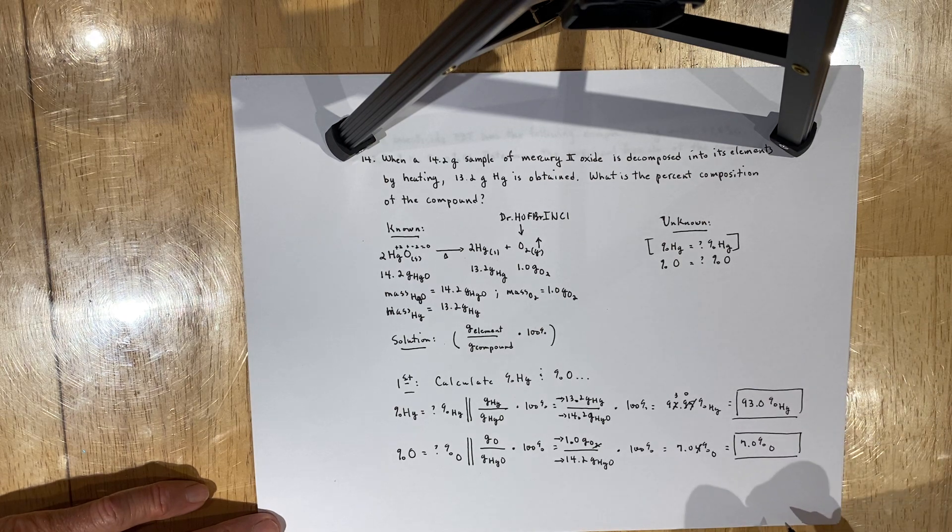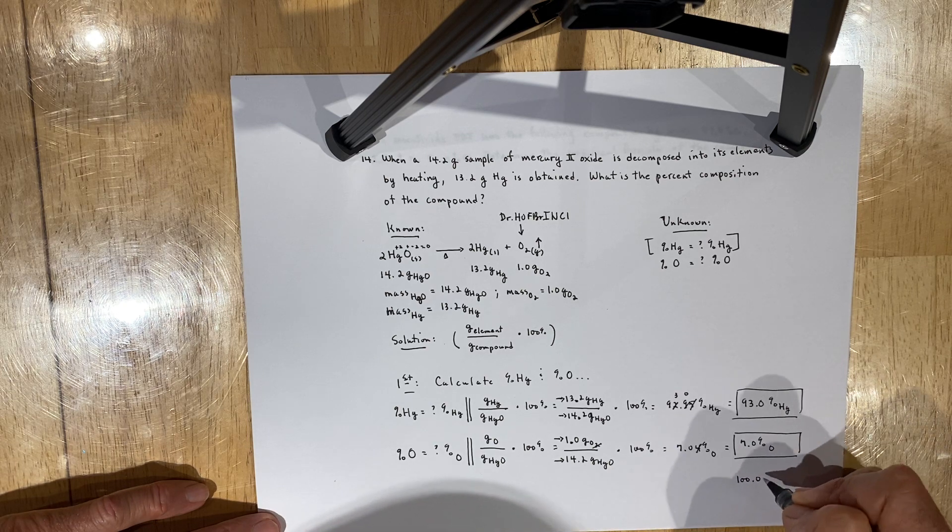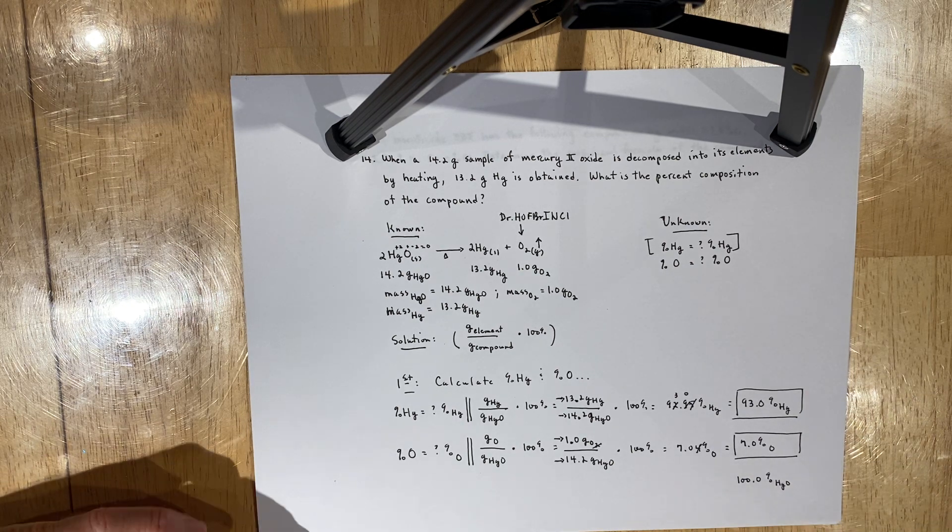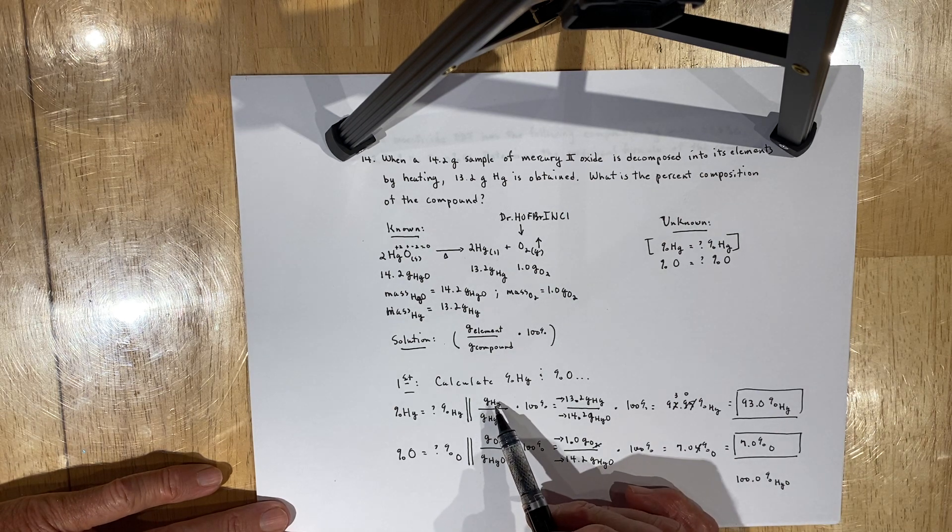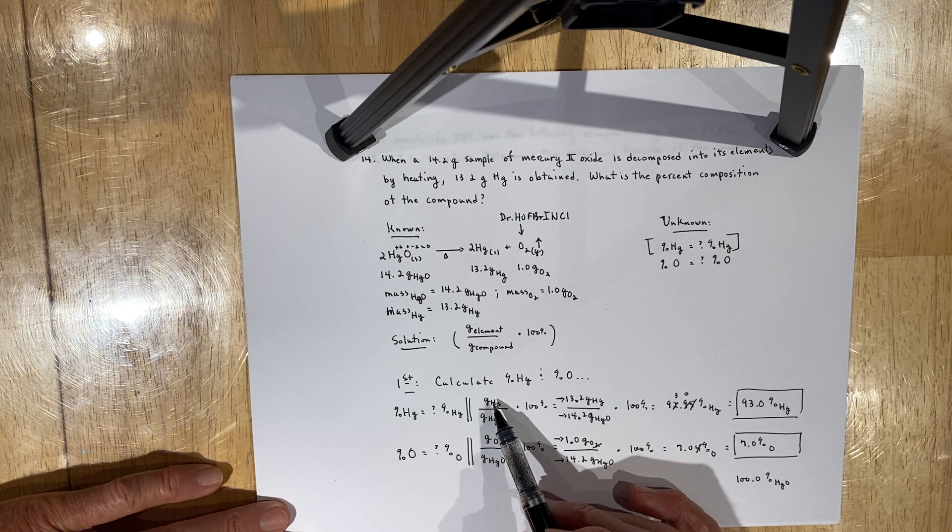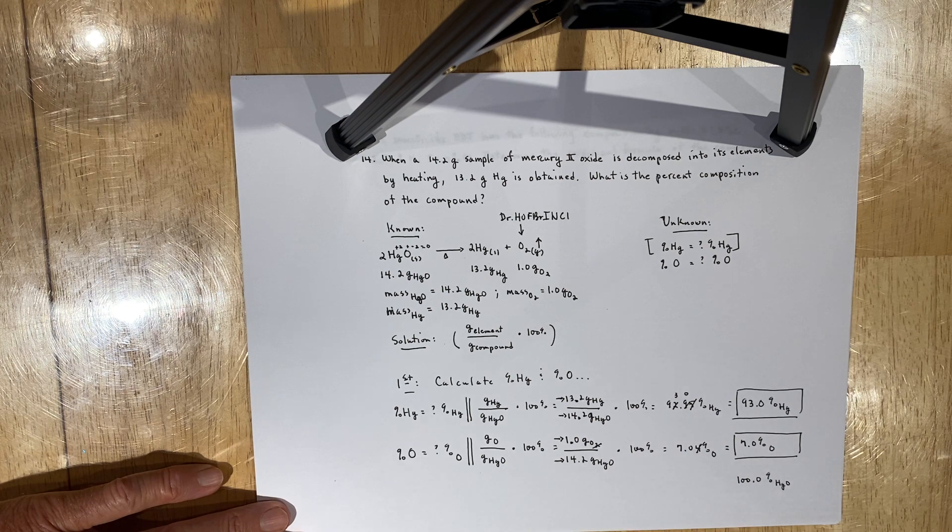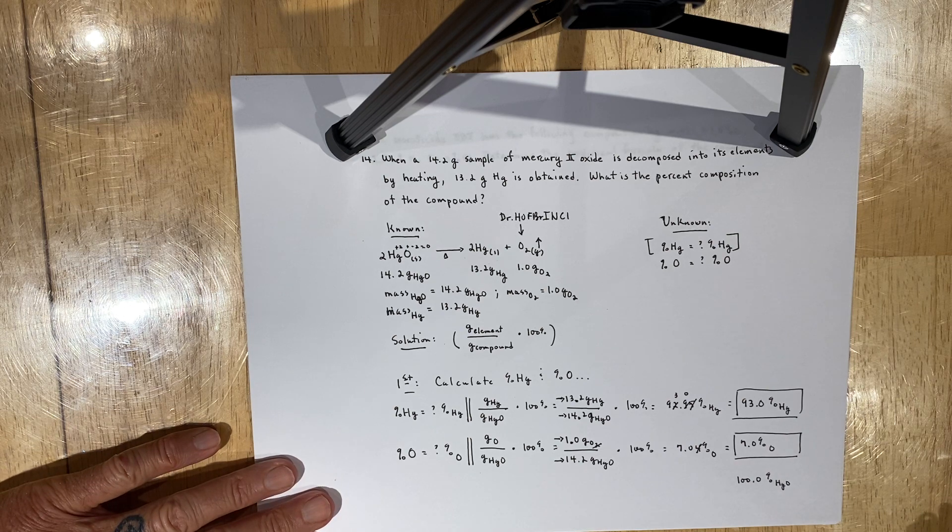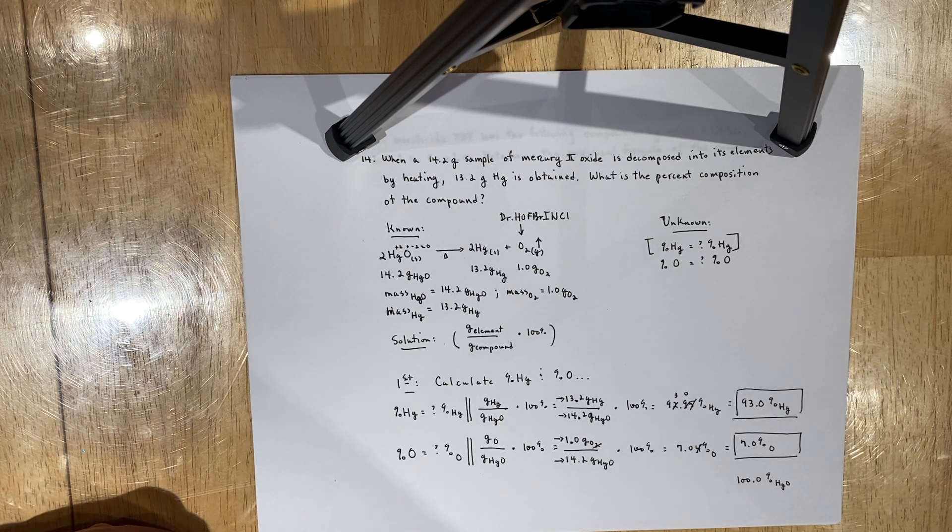Which makes good sense because 93 plus 7 sums to 100% of mercury oxide. So with that, that's how you generally handle percent composition problems. Keep in mind it's the mass of an element divided by the mass of a compound or the mass of the part over the mass of the whole times 100. So therefore, that should be helpful to you in handling these kinds of problems, which are rather straightforward calculations. And that should allow you to be successful on them in the future.